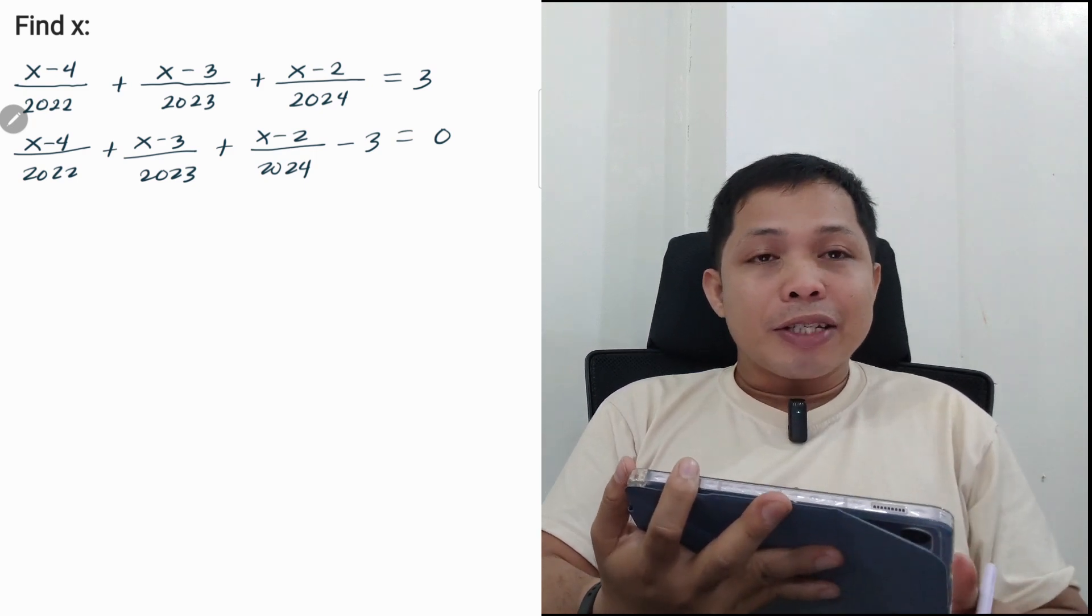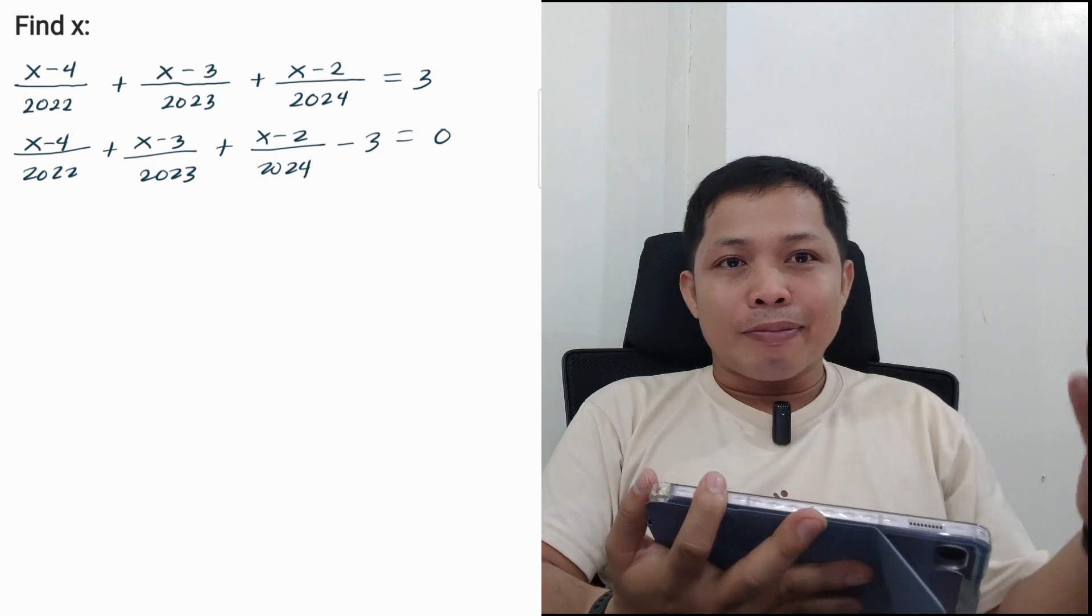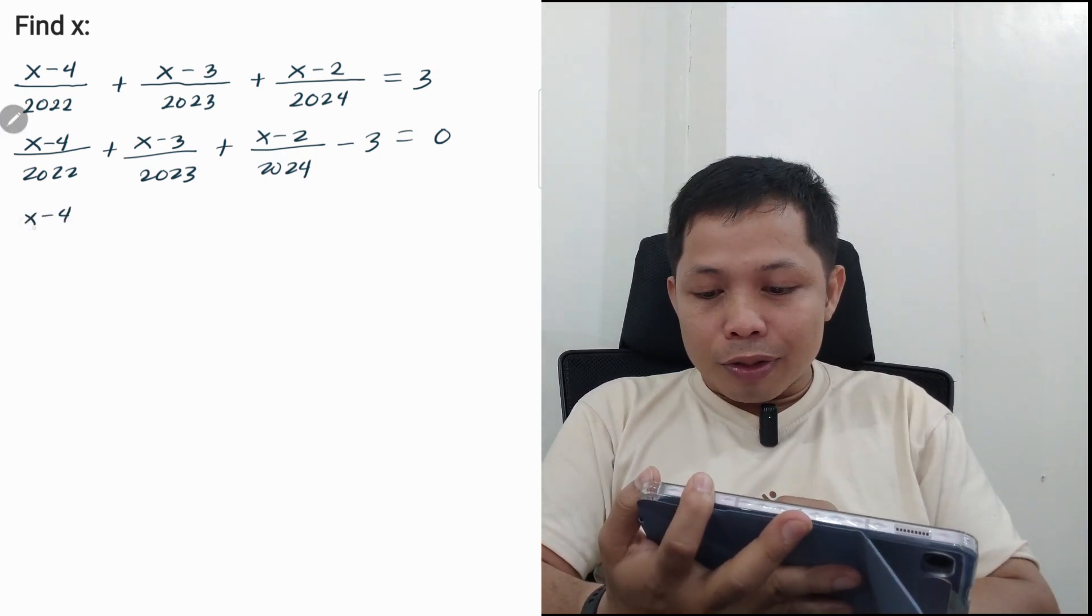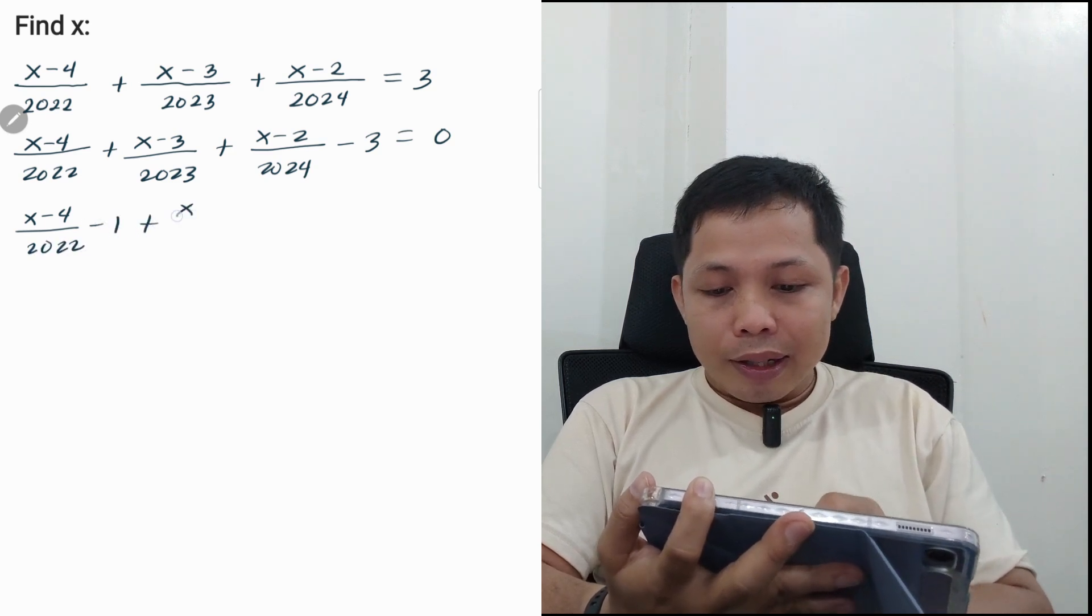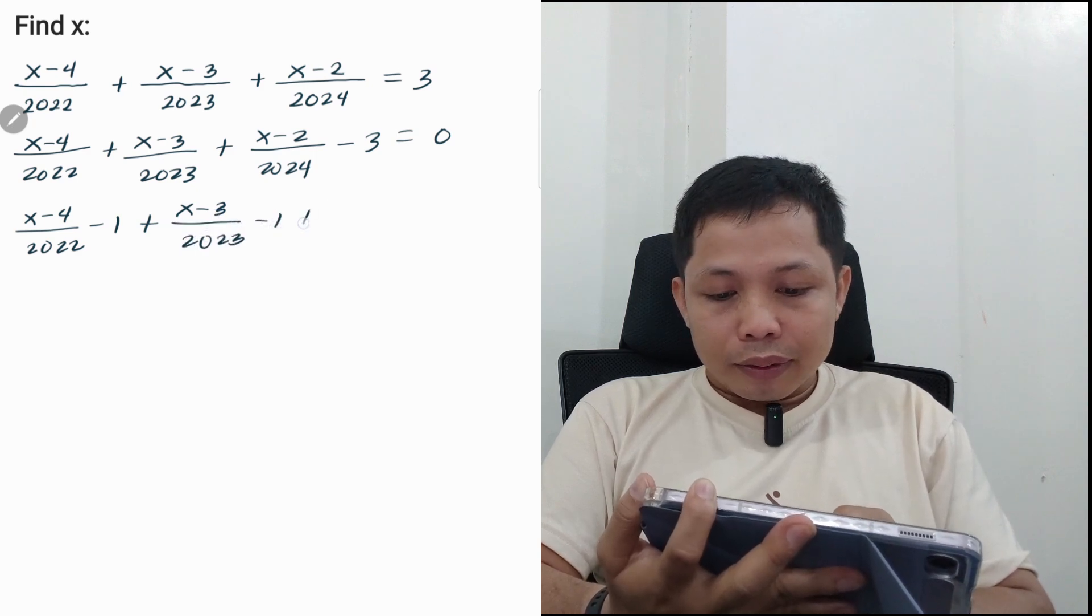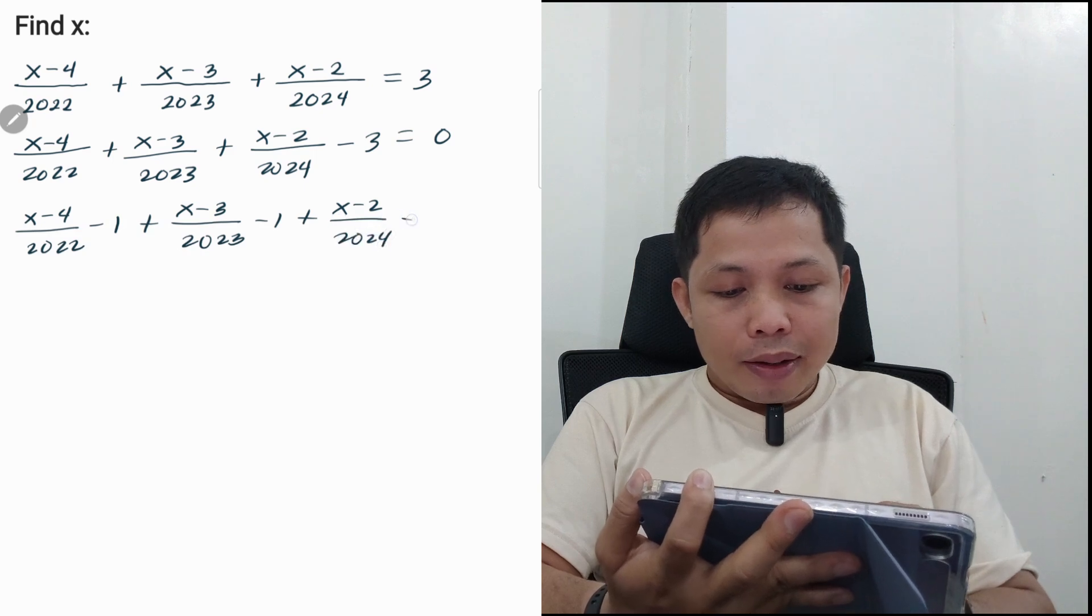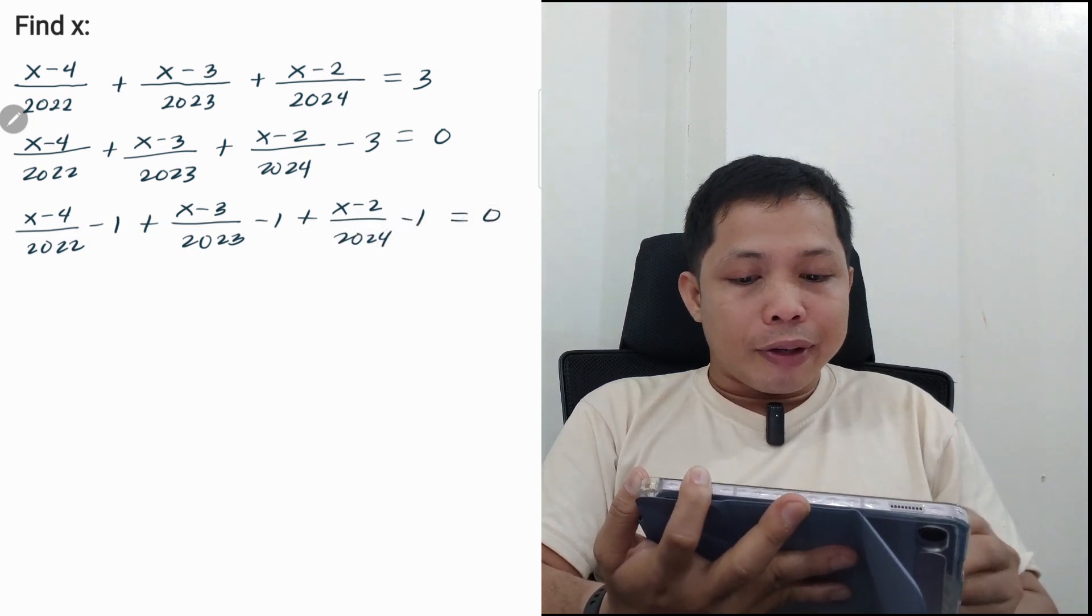Now, this minus 3 must be distributed for each term. So that is minus 1 for every term. We need to subtract this first term by 1, minus 1 here. For the second term, we have minus 1. And for the last term, minus 1. And everything is equal to 0.